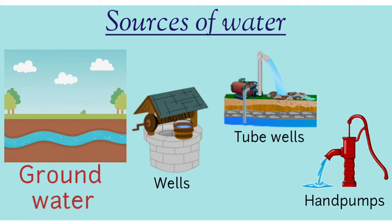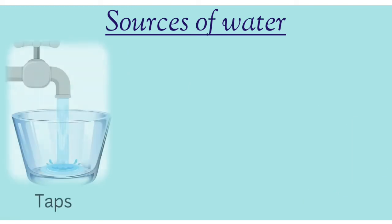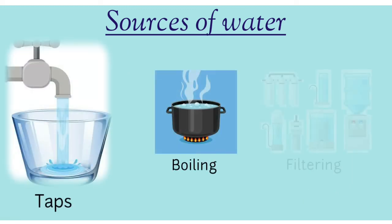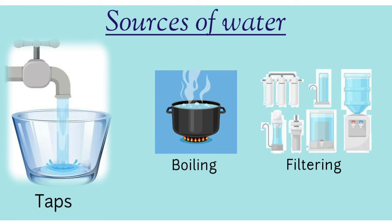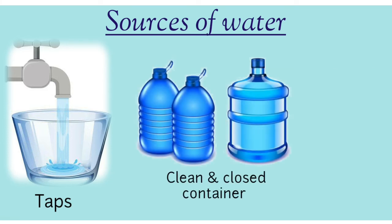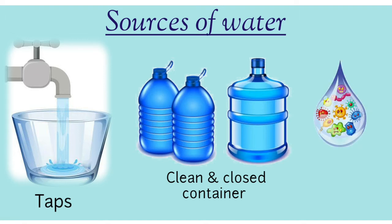Water from all the sources reaches our house through taps. Tap water can be cleaned by boiling and filtering. Children, we should always drink boiled or filtered water, and drinking water should be stored in clean and closed containers. Drinking dirty water can cause many diseases. So we should only drink filtered and boiled water.